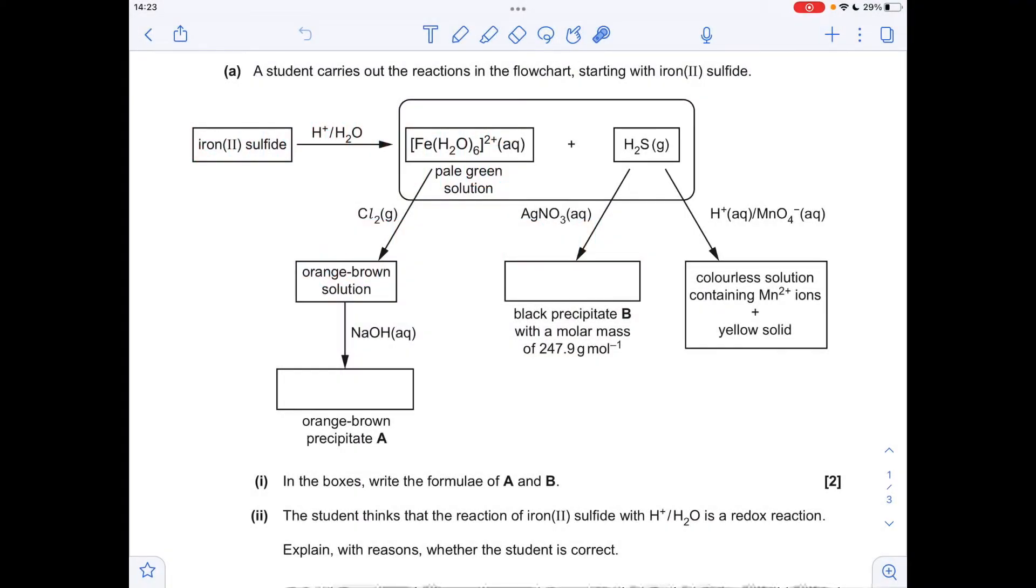So we'll make a start to the formula of the orange-brown precipitate A. If we think about what's happened, we've started with FeH2O6 2+, so iron's in its 2-plus oxidation state, pale green color. It's been reacted with chlorine and we've got an orange-brown solution. So it's actually been oxidized up to iron-3.